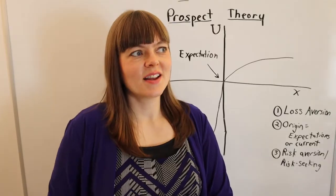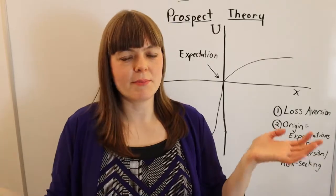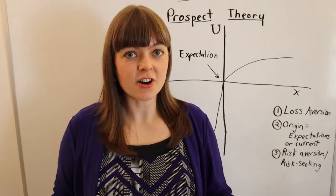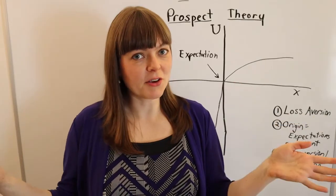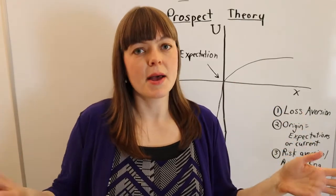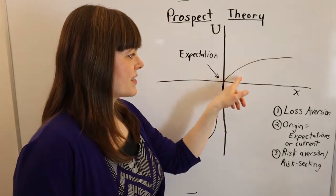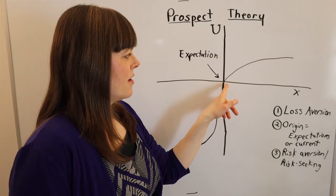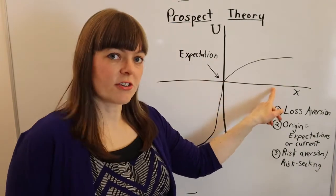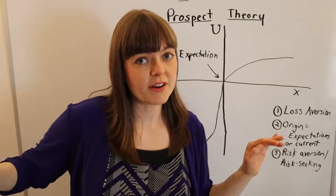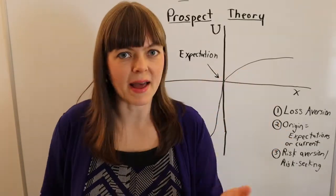And of course, what do people choose? We know that you can do this on many, many people and the vast majority of them are going to choose the $50 for sure. Even though the expected value of those two things is the same, people choose to avoid the risk. So in the positive realm, and of course that's the positive realm because we're talking about between $0 and $100, people choose to avoid the risk and they go for the sure bet. And that's consistent.